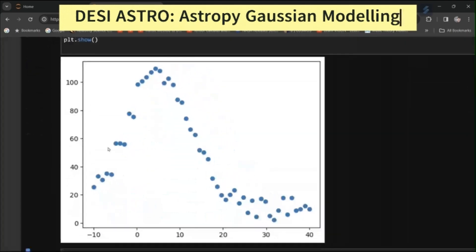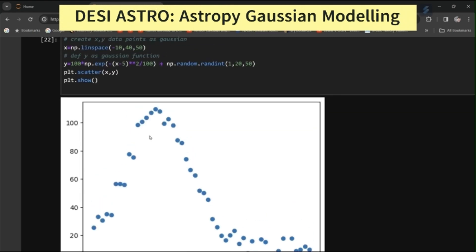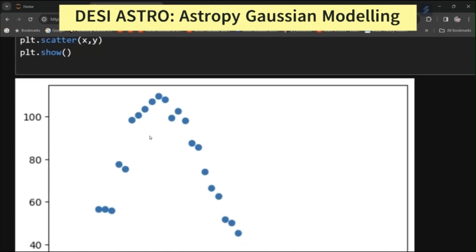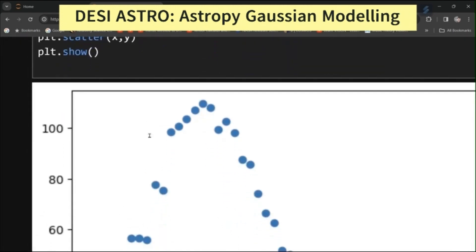You can see here are some deviations from the mean positions of the data points. So now it's time to fit Gaussian through these data points.